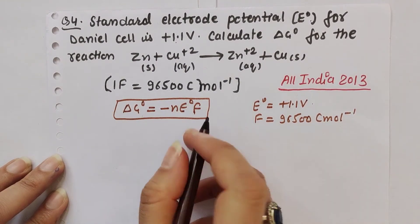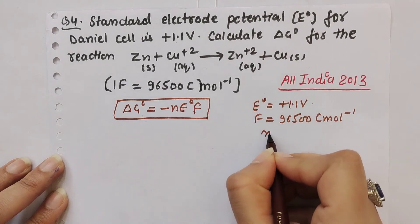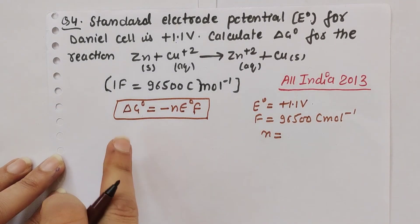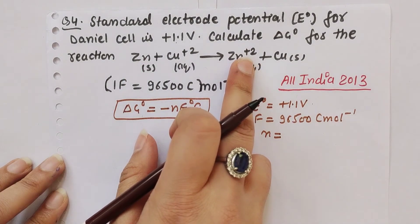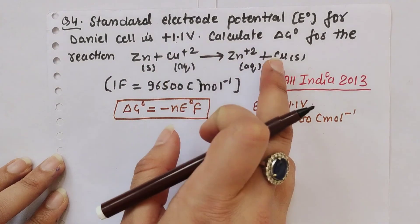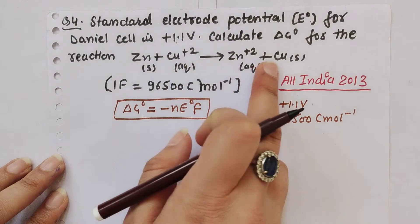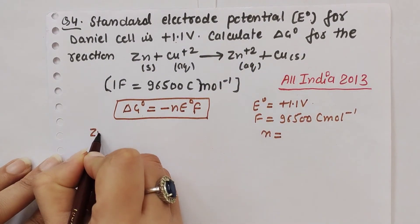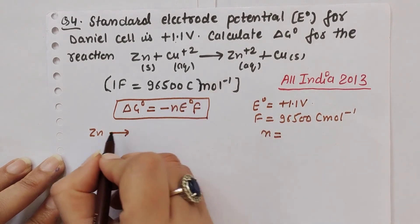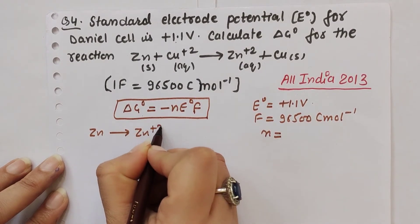We need the value of n, the number of electrons involved. From the reaction, Zn goes to Zn²⁺, so 2 electrons are involved. Therefore n = 2.